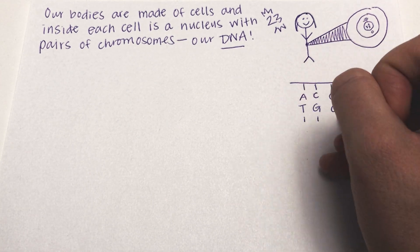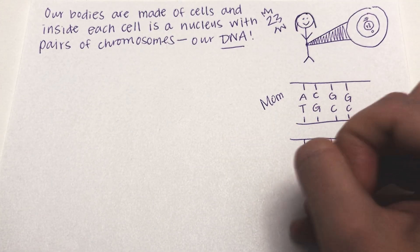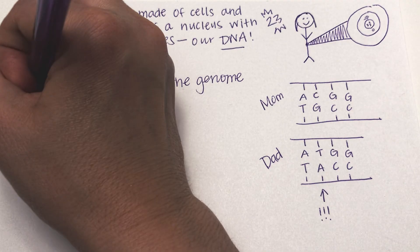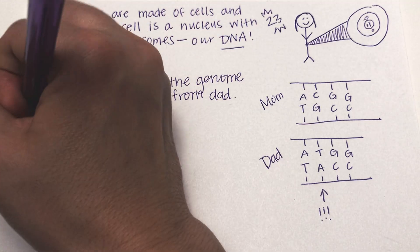We get one copy of the genome from mom and one from dad. The letters represent four nucleic acids: adenine, guanine, cytosine, and thymine.